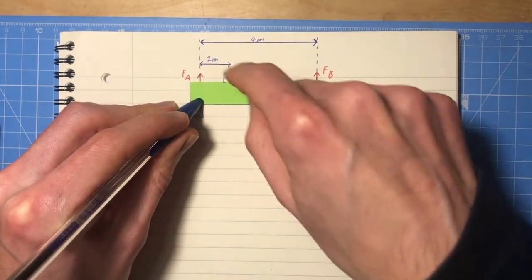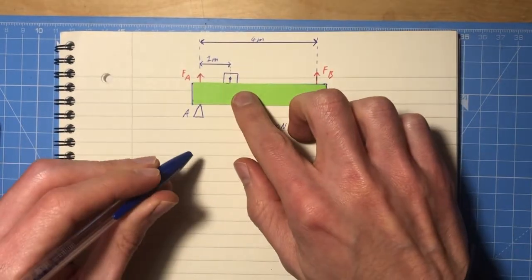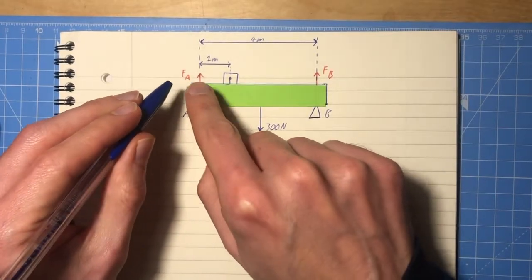And so these divide into clockwise and anti-clockwise, and we're going to measure all of our distances from A.